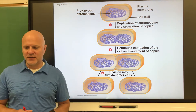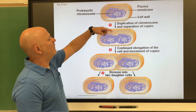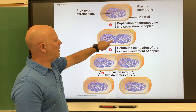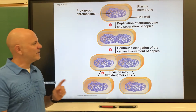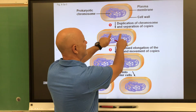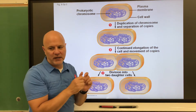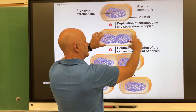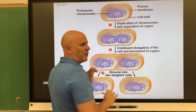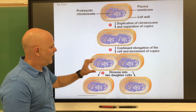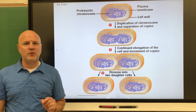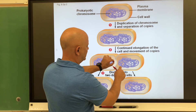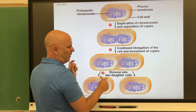Let's look at the steps in binary fission. We start off with one chromosome, which then duplicates itself so we have two chromosomes. These chromosomes attach to the plasma membrane at different locations. Then the cell elongates and stretches out, separating the two chromosomes from each other. The plasma membrane then grows inward in between those two chromosomes, separating the cell into two cells, and new cell wall forms in those areas.